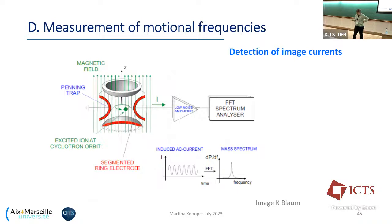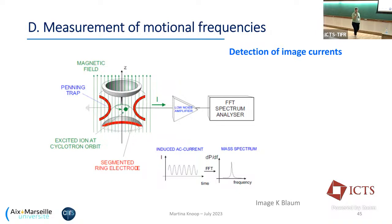Another technique for measuring motional frequencies — used in both Paul and Penning traps — is the image current method. A moving charge induces an image current on the electrodes, which can be monitored to determine the motional frequency of the particle. Measuring these motional frequencies with extremely high precision is the basis for some of the most fundamental spectroscopy experiments, which I will talk about.